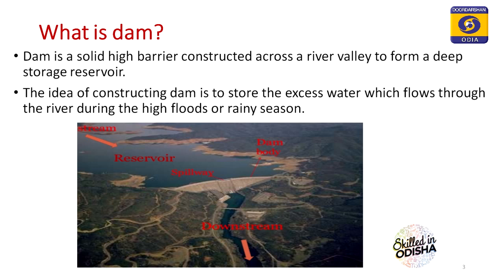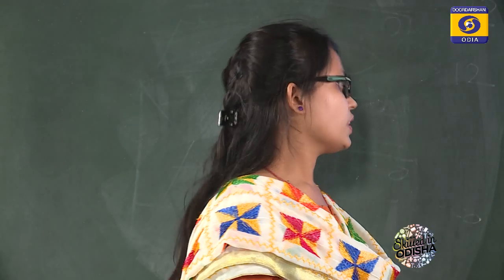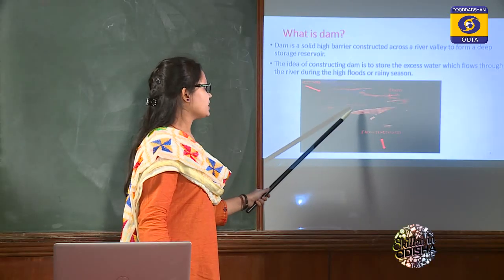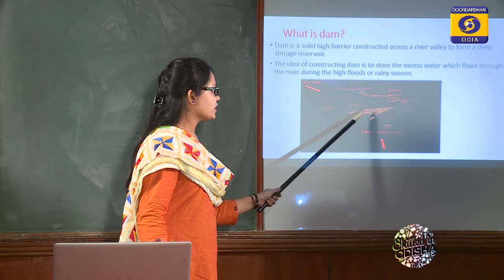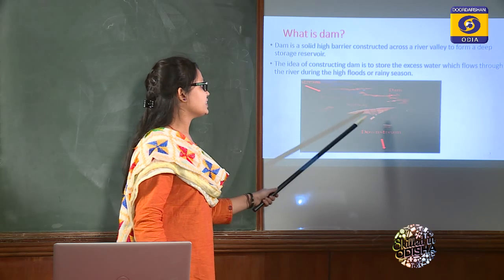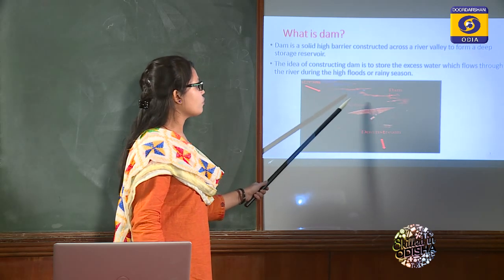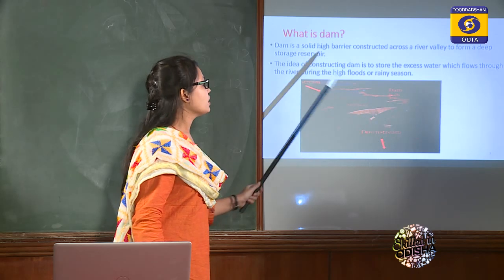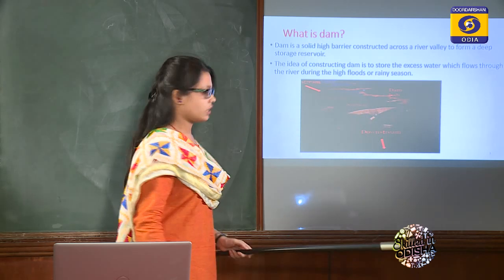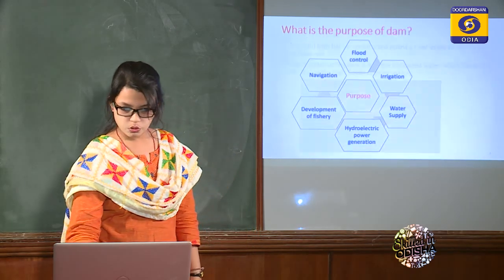Another term visible in the diagram is the spillway. A spillway is a structure constructed at the dam side for disposing of the excess amount of water from the water reservoir to the downstream side. I will teach spillways in the coming lecture sessions.